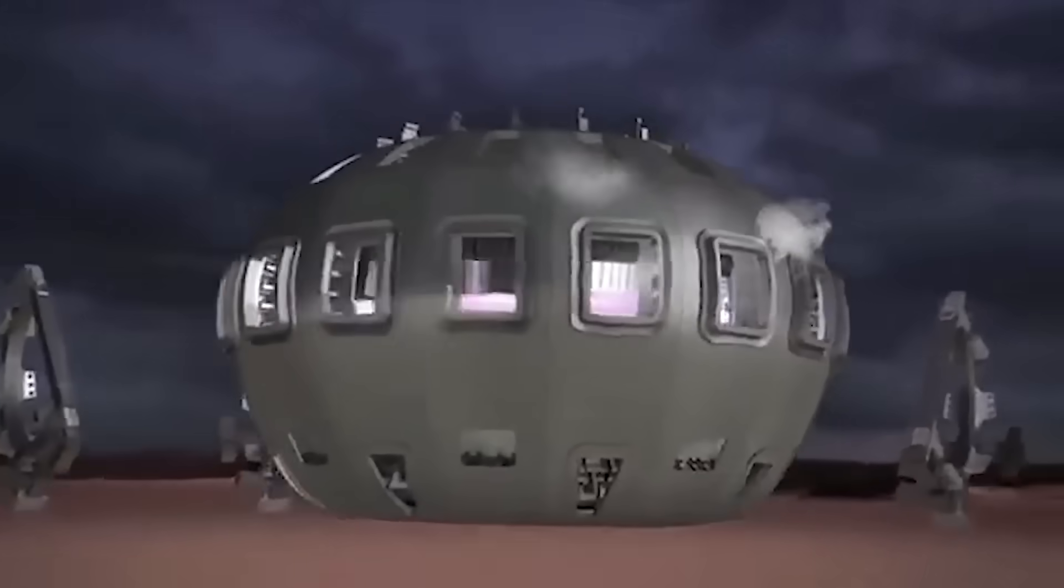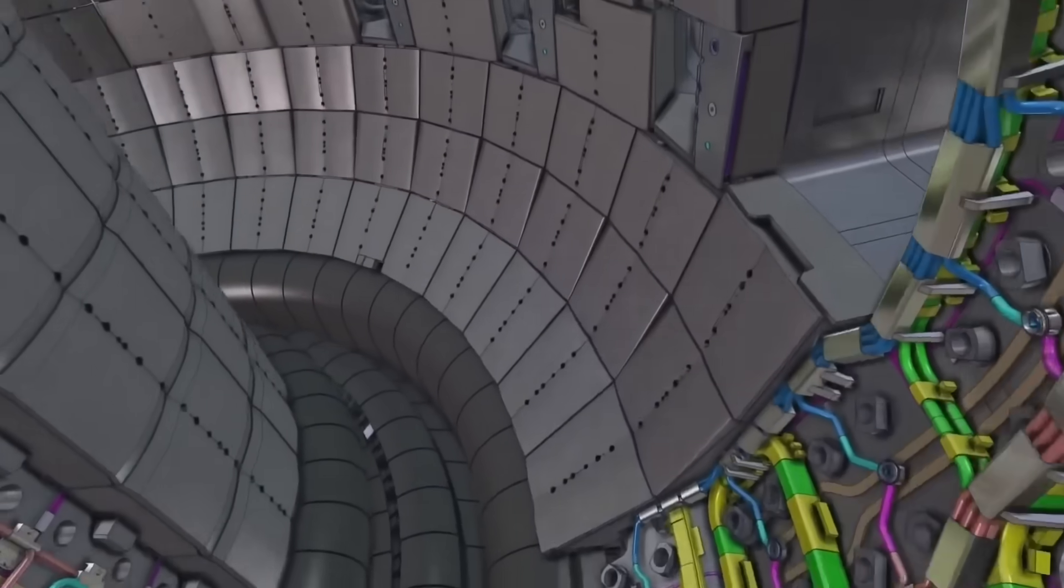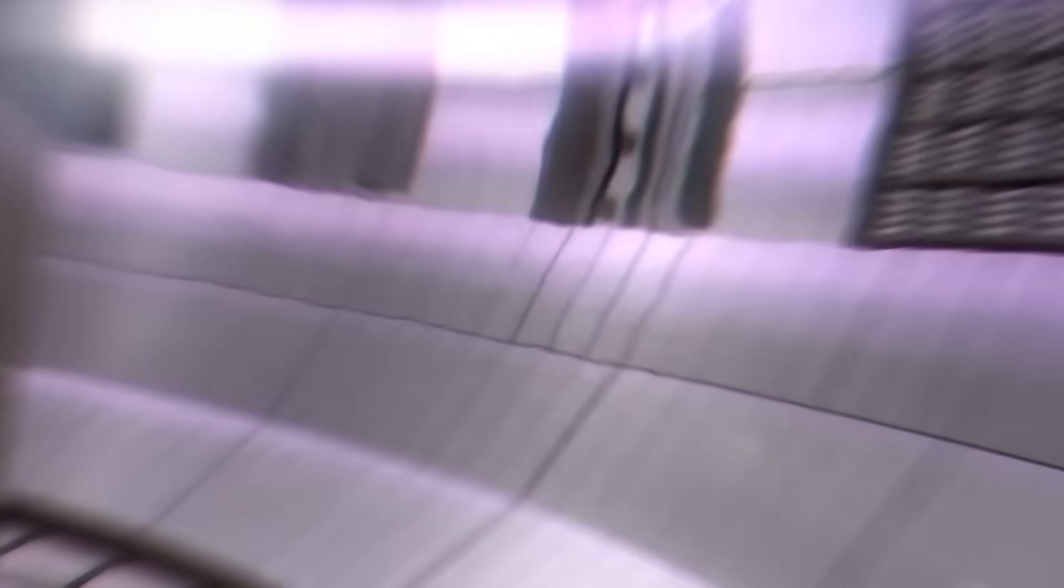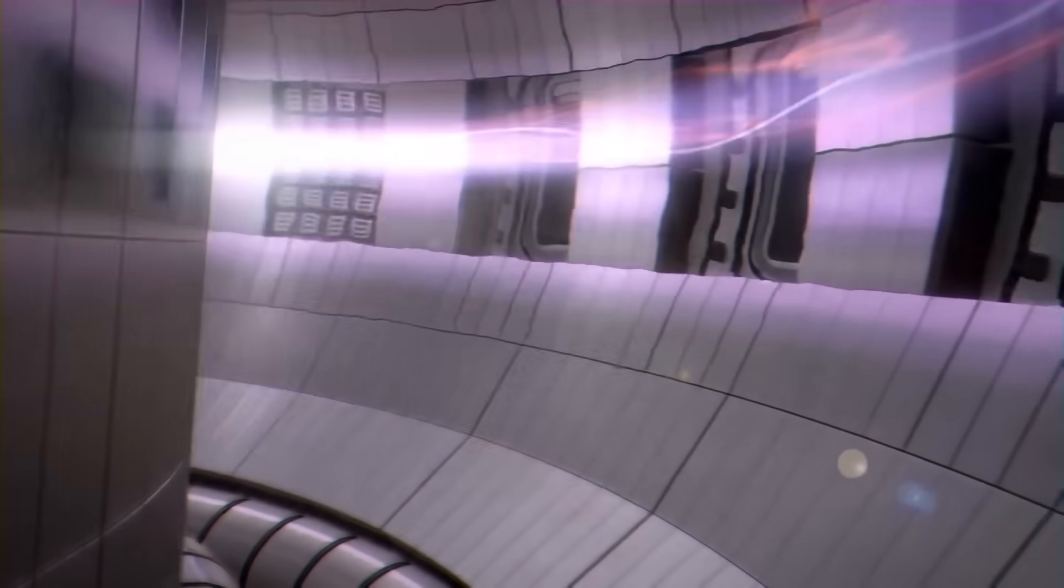To protect workers and the environment, a fusion reactor must be surrounded by thick shielding, typically a meter of dense material such as steel or concrete. This shielding absorbs the neutrons and prevents them from escaping.